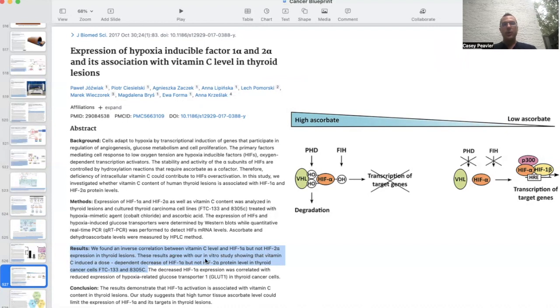These results agree with our in vitro study showing that vitamin C induced a dose-dependent decrease in HIF-1 alpha, but not HIF-2 alpha protein level in thyroid cancer cells. The decrease in HIF-1 expression was correlated with reduced expression hypoxia-related glucose transporter 1 and thyroid cancer cells. So as you can see, the high-dose ascorbic acid is what's necessary, which would have to be given by IV in order to have this process help.